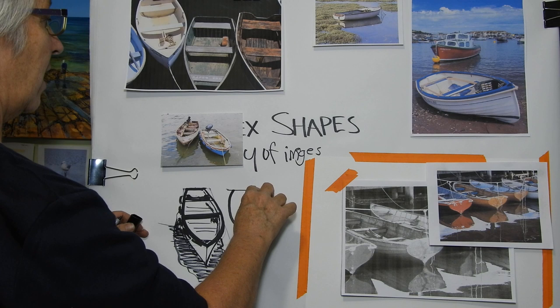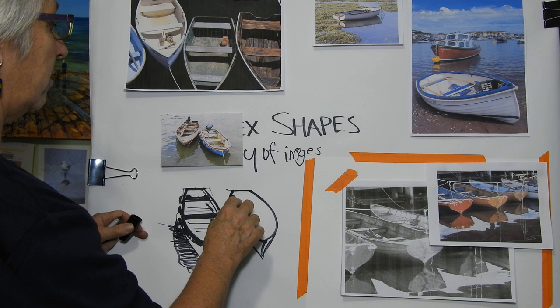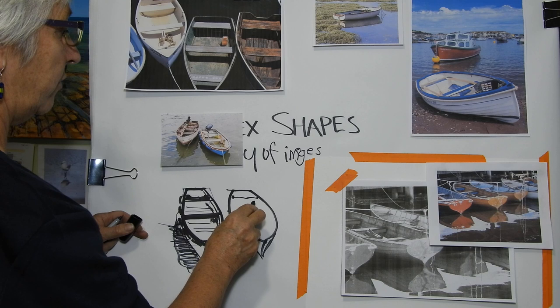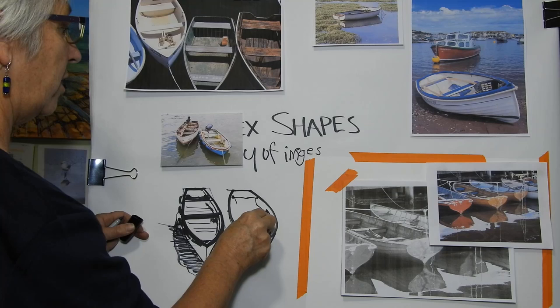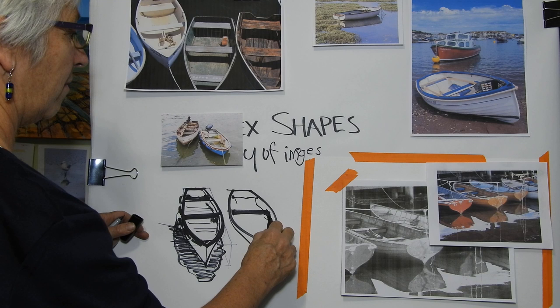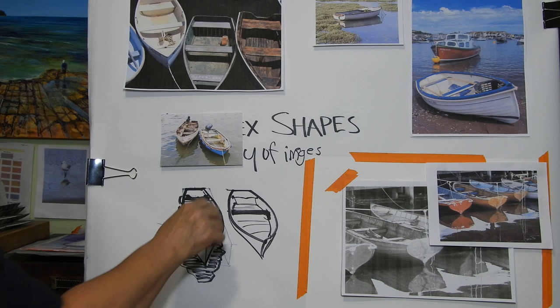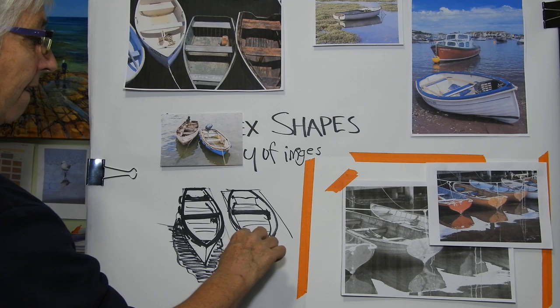Once you get the idea of this it becomes easier. So I'm just going to do this without worrying too much about putting the box in. There's the seat, that's the floor coming around, another line where the seat comes across, a little boxy bit underneath it, the floor forwards. You can see the idea — I can change the shape of the boat by changing which way the box goes.